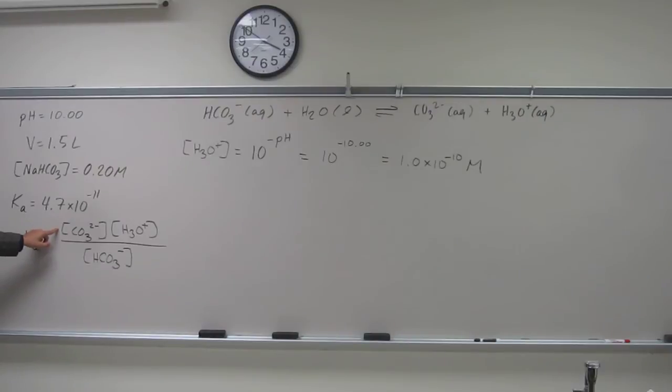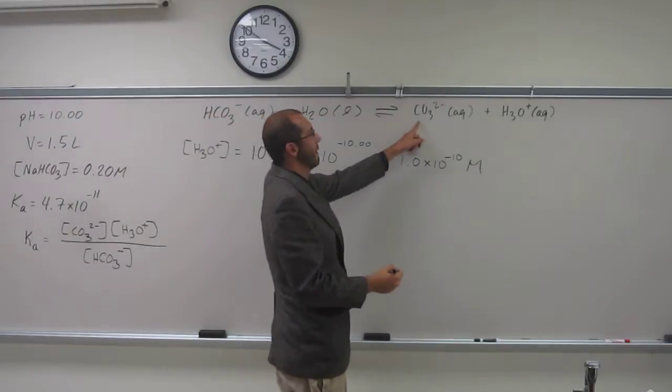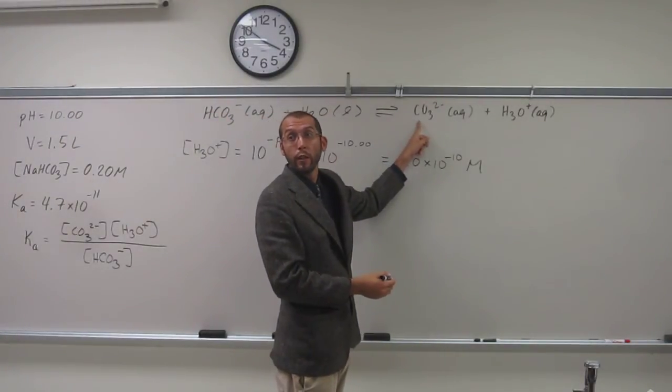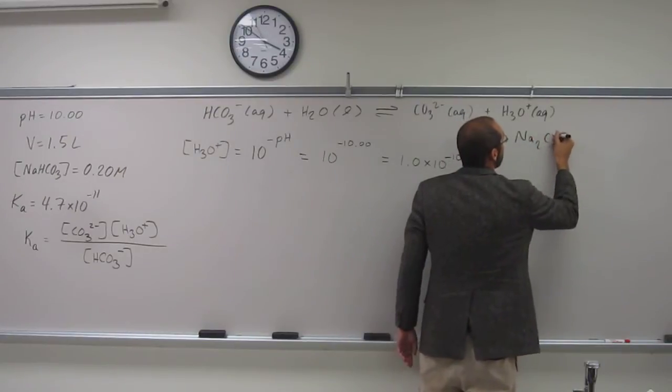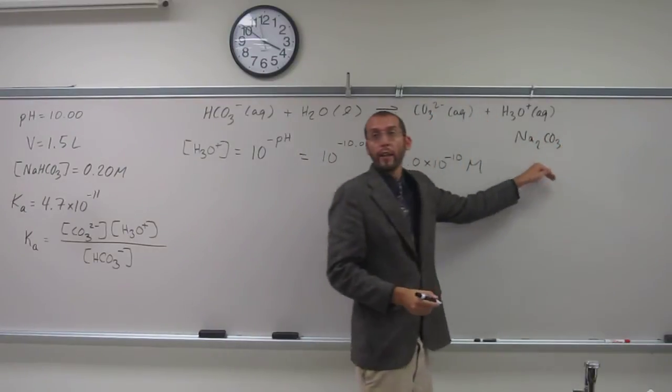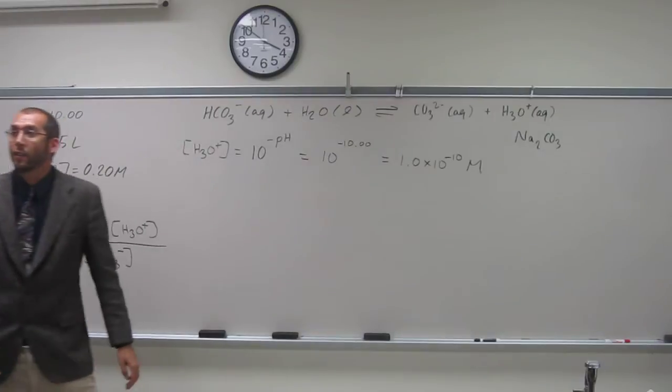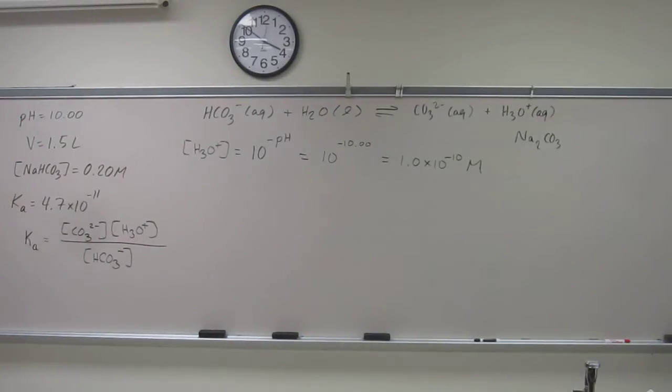We need to figure out the concentration because we're looking for the mass of sodium carbonate. You guys know what sodium carbonate is - Na2CO3. That's what we're eventually looking for, the mass of that. In order to eventually find the mass, we first need to find the concentration of it.